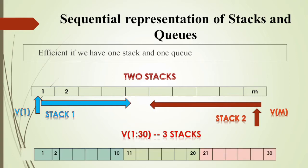Now, if we have multiple stacks, we have to divide the whole memory into n number. The number of stacks is divided by the top of the stack, the bottom of the stack, and the area point is fixed. So the sequential representation becomes inefficient if you want to represent more number of stacks of varying sizes. That's why we go for a linked representation.